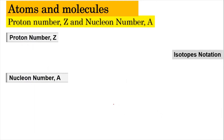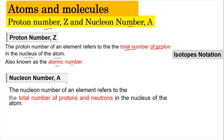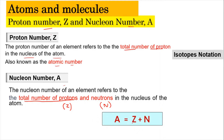Next, we're going to look into the definition of proton number and nuclear number. The proton number is the total number of protons in the nucleus of an atom, also known as the atomic number. The nuclear number refers to the total number of protons (Z) and neutrons (N) in the nucleus, written as A = Z + N. Because it refers to the total mass of an atom, it is also known as the mass number.